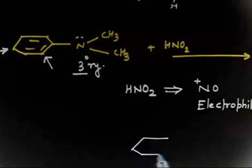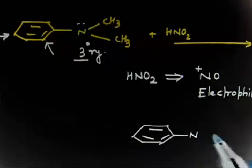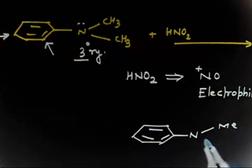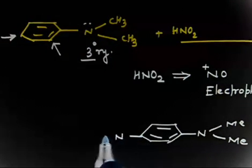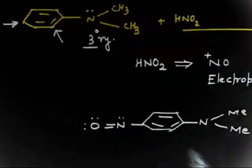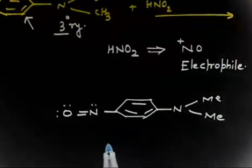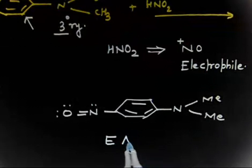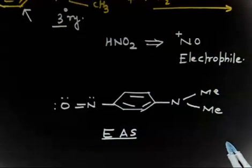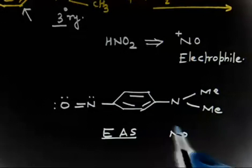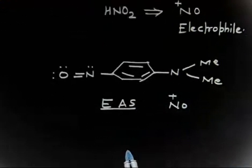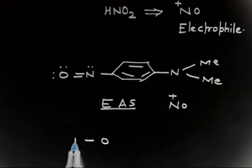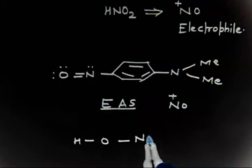The para product is the major product in this reaction. The electrophile NO⁺ attacks at the para position, giving the major product with the NMe₂ group and one NO group attached at the para position. This reaction is nothing but electrophilic aromatic substitution (EAS), where the electrophile is NO⁺.